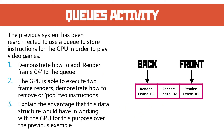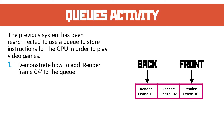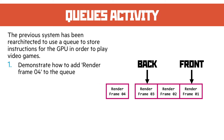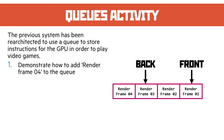Queues are the better way of doing this, and this is reflected in the question. We've changed the previous system to use a queue to store the instructions of the GPU. Question 1: demonstrate how to add RenderFrame 4 to the queue — again reasonably straightforward. It comes in and drops in at the back, adjusting the back pointer as it does so.